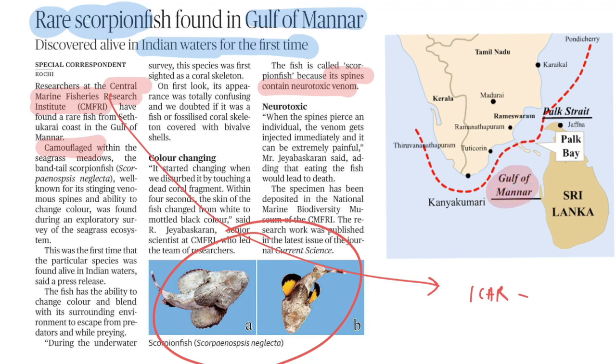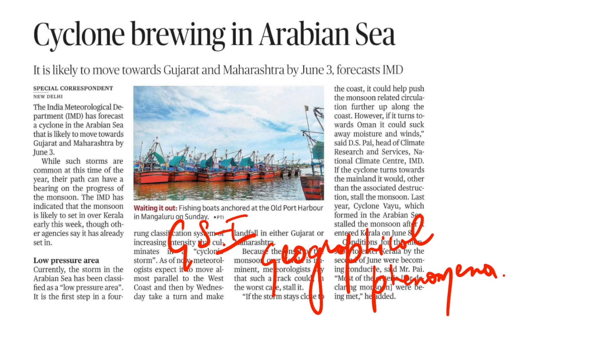These are all the qualities of this particular fish. If we see the location where it has been found then you can see here the Gulf of Mannar which is in between India and Sri Lanka. From north to south if we see the locations then there is Palk Strait then after that there is Palk Bay and in the south there is Gulf of Mannar. As I told you it is found for the first time in Indian waters alive so please remember these information for your prelims and now we'll move to the next.